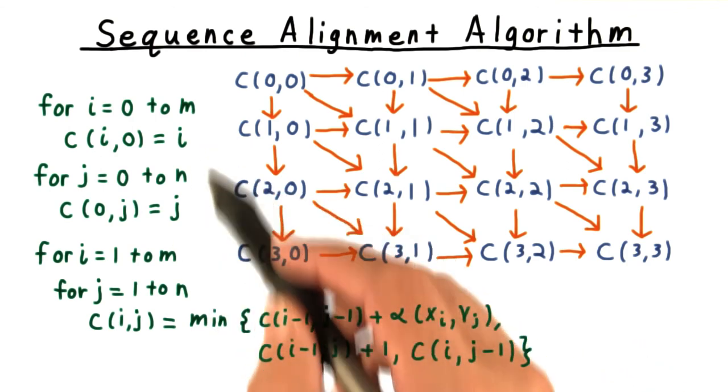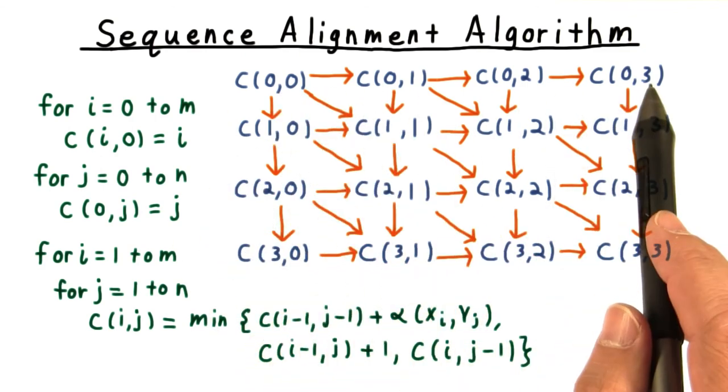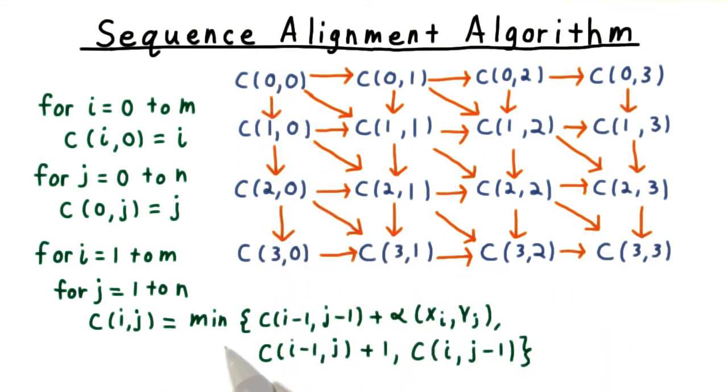First, we need to fill out the base cases, this first row and this first column. And then it's just a matter of passing over the grid and taking the minimum of the three possibilities outlined earlier.